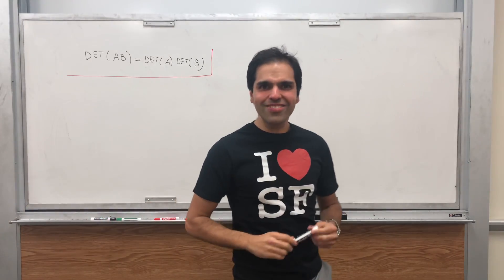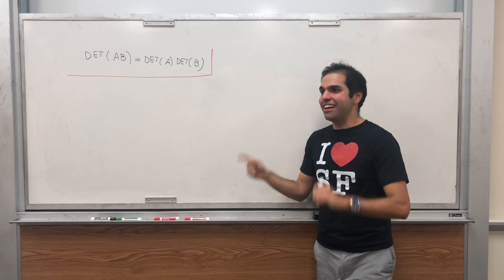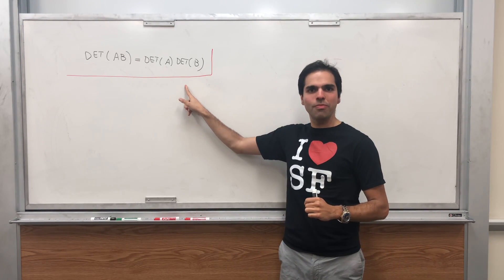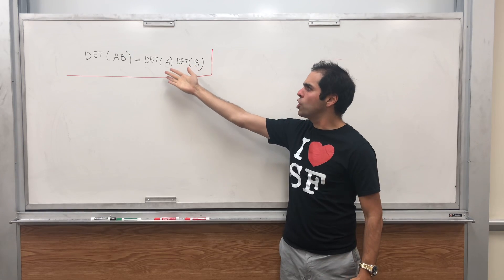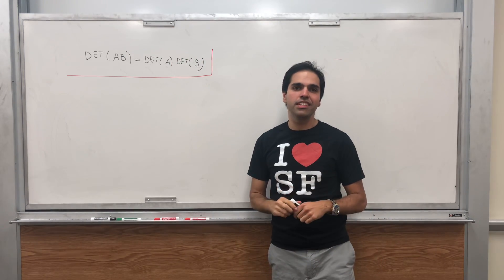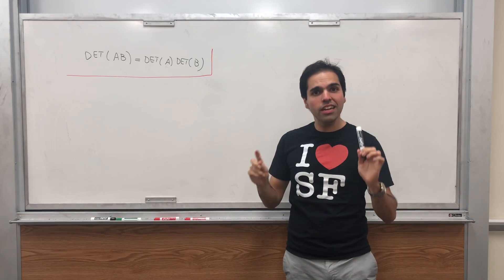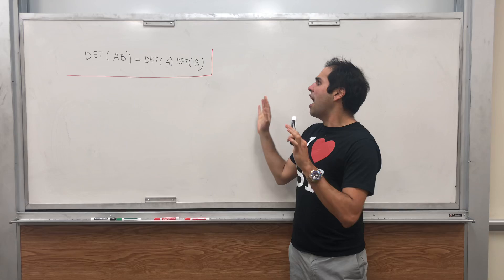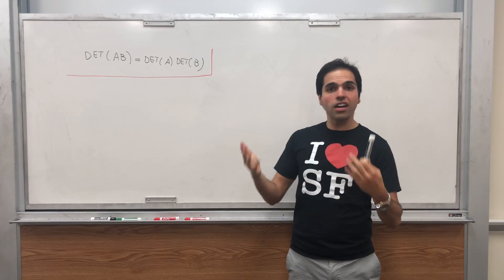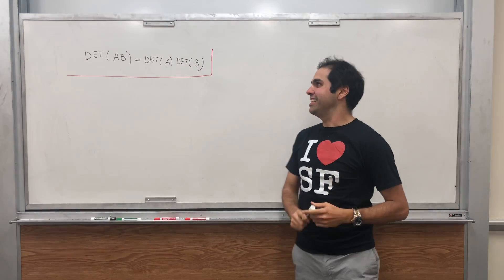Thanks for watching. Today we would like to prove one of the, if not the most important fact about determinants, namely that the determinant of AB is the determinant of A times the determinant of B. In this proof, I would really like you to see how beautiful linear algebra is, because we will not do any messy calculations. We'll just use our minds.